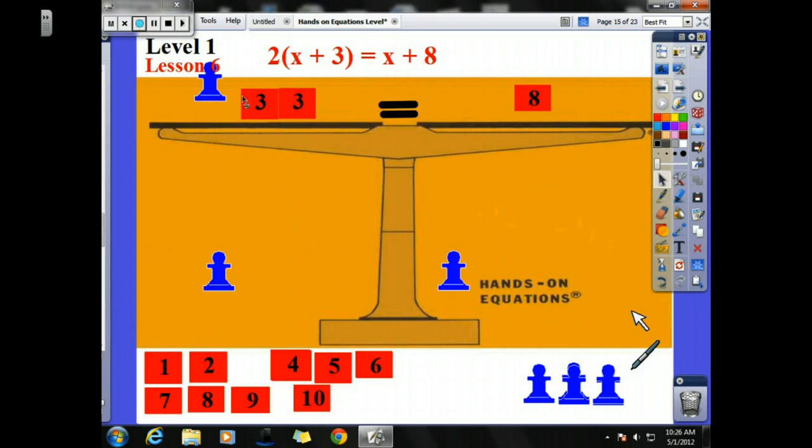And I have 8 over here. I can subtract 6 from both sides of my equations. And that leaves me with 8 minus 6 is 2. That leaves me with 1x equals 2.